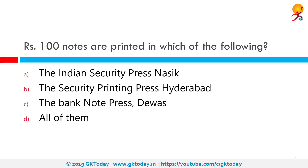Where are Rs. 100 notes printed? The correct answer is the Indian Security Press, Nasik, the Security Printing Press Hyderabad, as well as the Bank Note Press in Dewas. The Indian Government Mint operates four mints in the country for the production of coins. Each currency coin minted in India and anywhere in the world has a special mint mark on it to identify the mint.